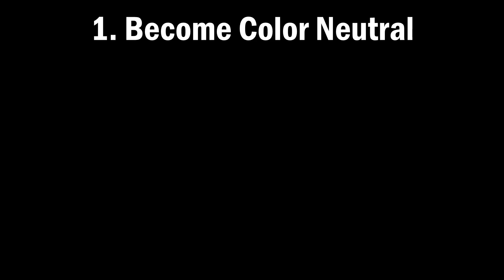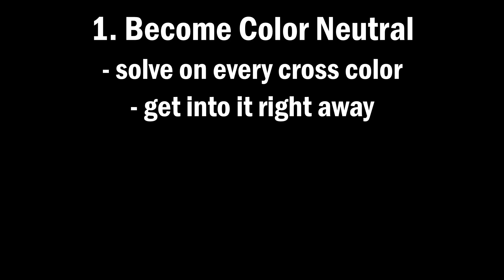So now for transitioning to full color neutrality, there are generally two ways that people will approach it. The first way is to just become color neutral, so that means that you just start solving on every cross color. Maybe ignore white if you already start with white because it's not worth practicing it if you're practicing all the other colors. So I think the advantage of this sort of method is that you can get into it right away and you learn all of them at the same speed, so you kind of pick up the patterns as you go.